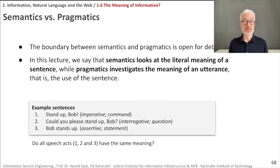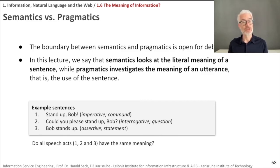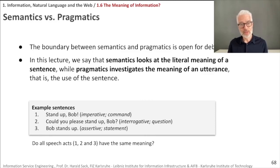Let's take three example sentences. The first is 'Stand up, Bob' — this is imperative, a command, and it can mean that Bob should get up, or that Bob should start doing something against something. The meaning is different from 'Could you please stand up, Bob?' which is a polite interrogative question. And I can also simply say 'Bob stands up,' which of course has another meaning, because it describes an action going on. Whether all three sentences have the same meaning is clear — they don't. What makes them different is the intention by which they are formed.